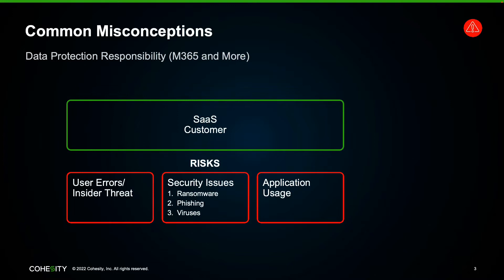Insider threats can impact your data, and you're going to have to step up and make sure that you can recover. Security issues can also impact data — ransomware is a huge headline topic these days. Organizations are being impacted regularly, implementing additional layers of security. Let's not forget phishing and viruses. And then there's application usage: some applications like Exchange Online have configuration options around calendaring, or with OneDrive you may keep copies of your data — but you have to set those things. Your SaaS provider does not do that for you.